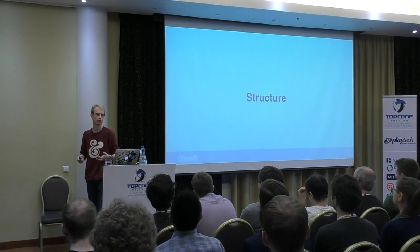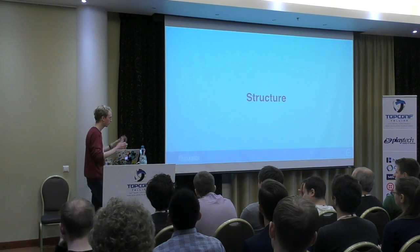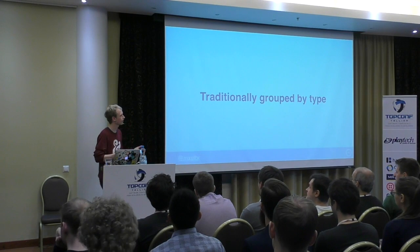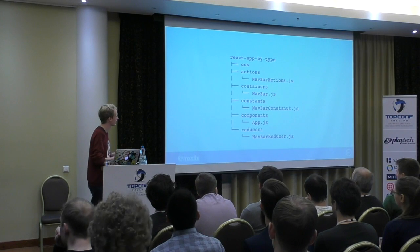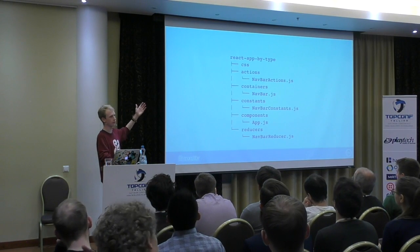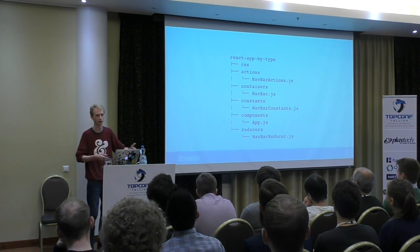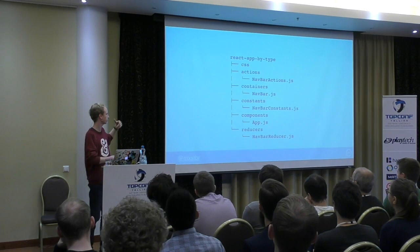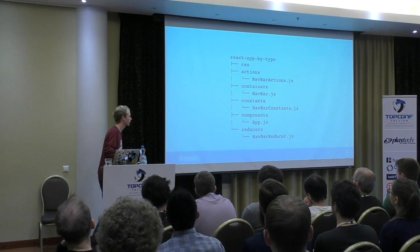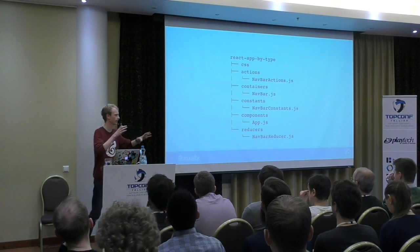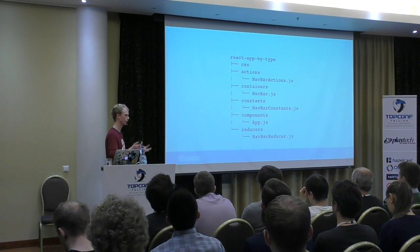This comes with a certain structure. Traditionally, React applications were grouped by type — you'd have an actions folder, a constants folder, a containers folder. For a navbar container with a toggle action, you'd have all these different files scattered around. If you wanted to add a feature to the navbar, you'd have to dig through six different folders trying to find everything. It's really hard to work with.